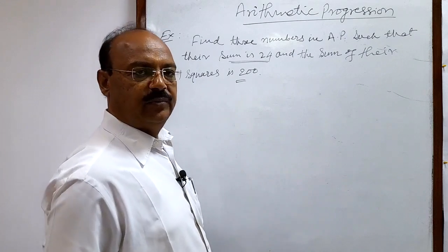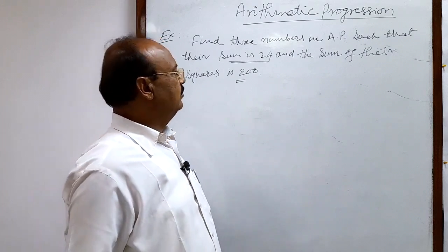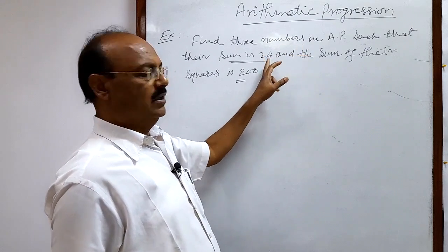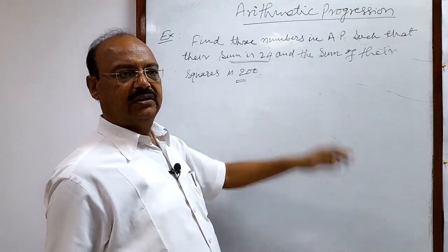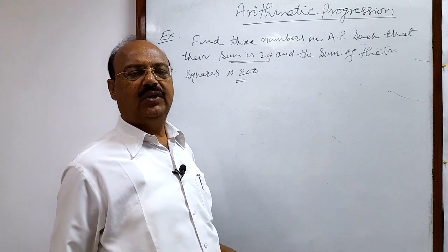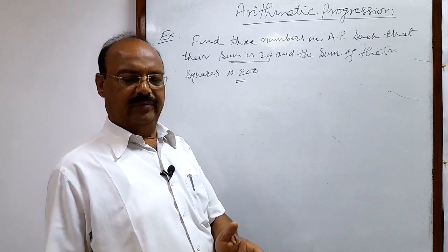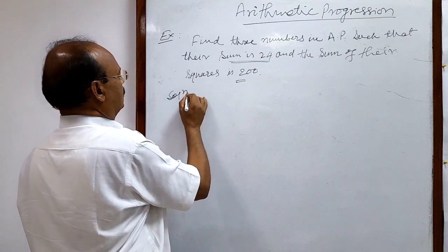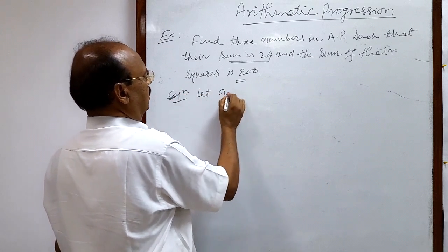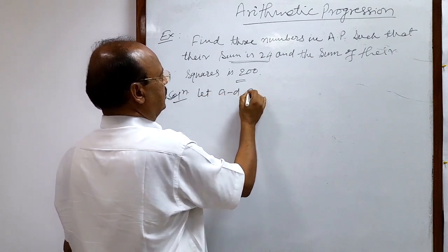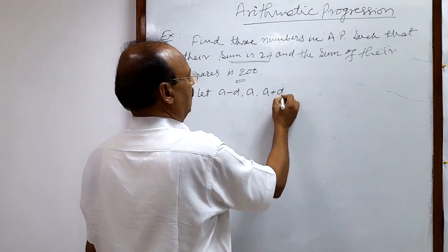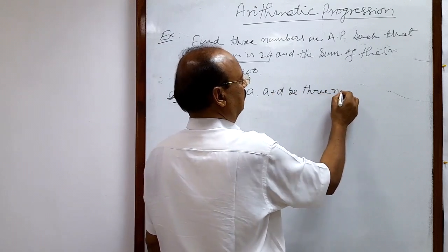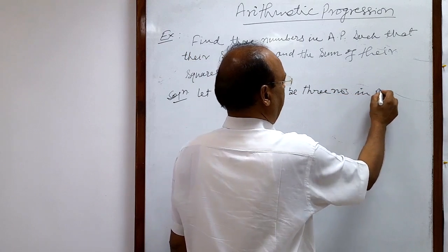As we have discussed in previous videos also, whenever the sum of 3 numbers in AP is given, then we must take the 3 numbers in the form a minus d, a, and a plus d. So let a minus d, a, and a plus d be the 3 numbers in AP.